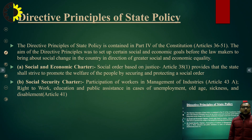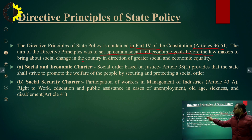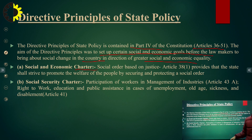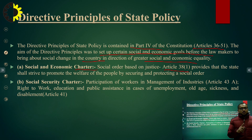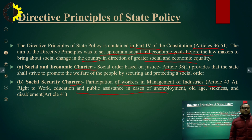The directive principles of state policy are contained in Part 4 of the constitution, that is Articles 36 to 51. The aim of these directive principles was to set up certain social and economic goals before the lawmakers to bring about social change in the country toward territorial, social, and economic equality. Article 38(1) provides that the state shall strive to promote the welfare of the people by securing and protecting a social order. The social security charter covers participation of workers in management of industries, and the right to work, education, and public assistance in cases of unemployment.